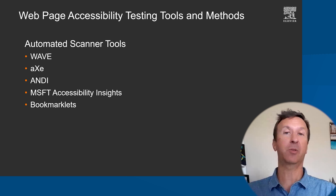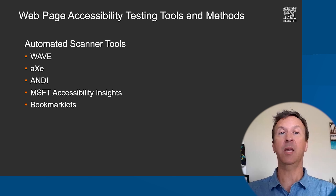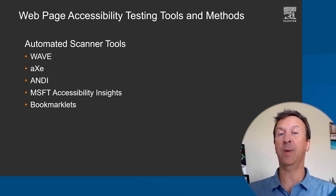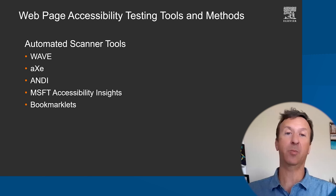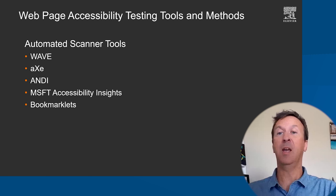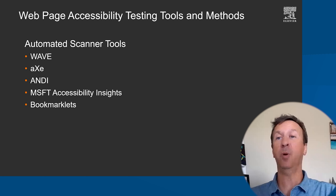Let's start with automated scanner tools. These tools are typically free browser plugins which can be used to test single or multiple web pages. Tools such as Wave, Axe, Andy, Microsoft Accessibility Insights, and Bookmarklets can be activated in one or two clicks. Automated scanners will use a rule set to judge the accessibility features present, missing, or messed up in the source code. They are great for sniffing out common problems such as missing alt text on images, poorly or unlabeled form controls, and poor text color contrast. One drawback is that they will only find 20 to 30% of the total possible accessibility issues, and there are some false positives with certain scanners.